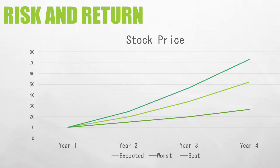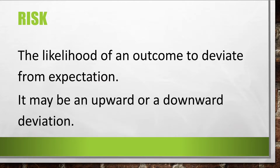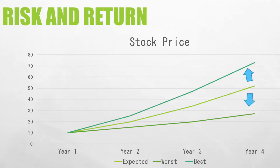We also have the plain green line, which pertains to the worst case scenario — what could happen if we are unlucky. With the aqua line, this is the best case scenario. If we are going to look at the possible things that can happen, our expectations may not actually happen. It can go below expectation or above expectation. This is what risk is. Risk is the likelihood of an outcome to deviate from expectation — it may be an upward or a downward deviation. The likelihood of this deviation is what we call risk.